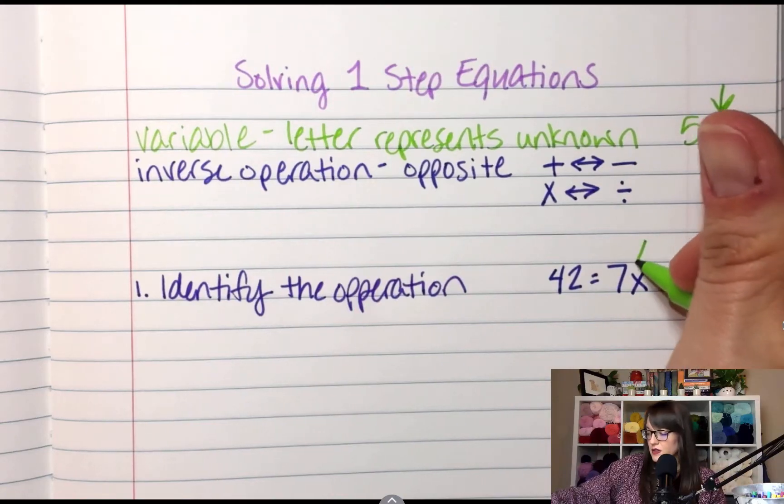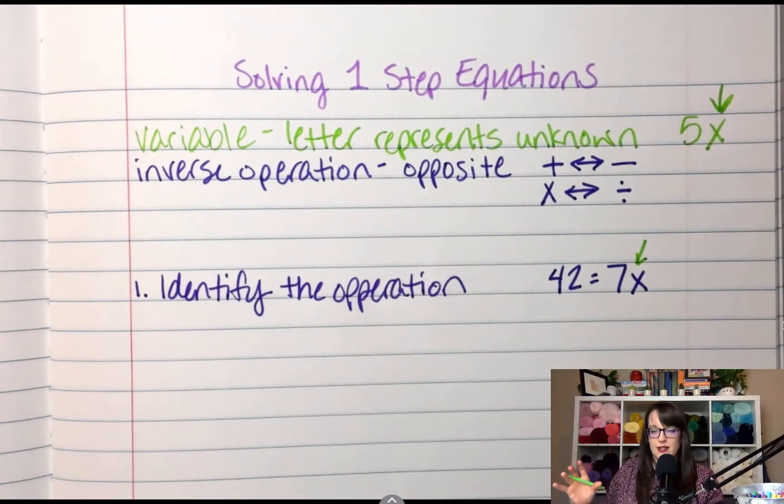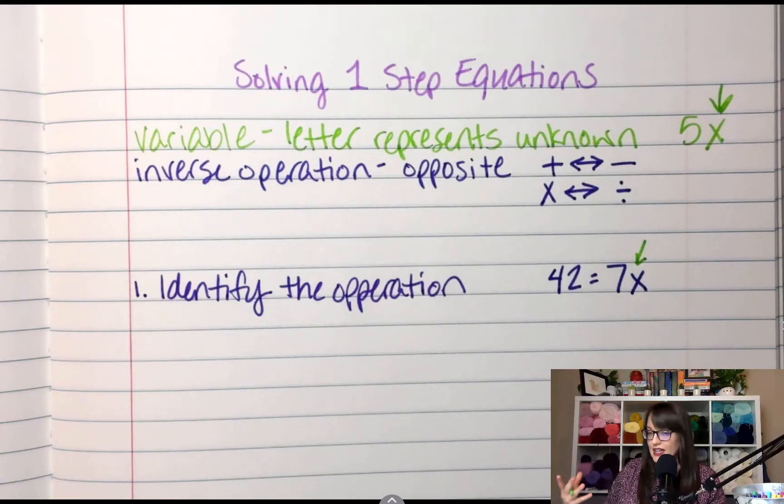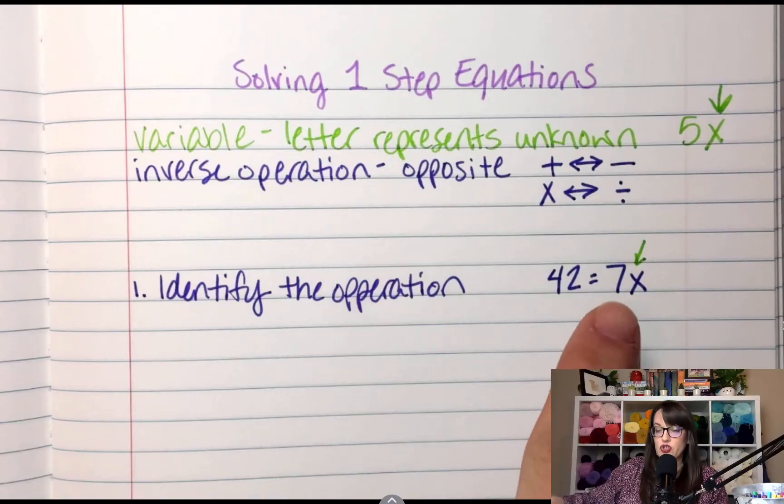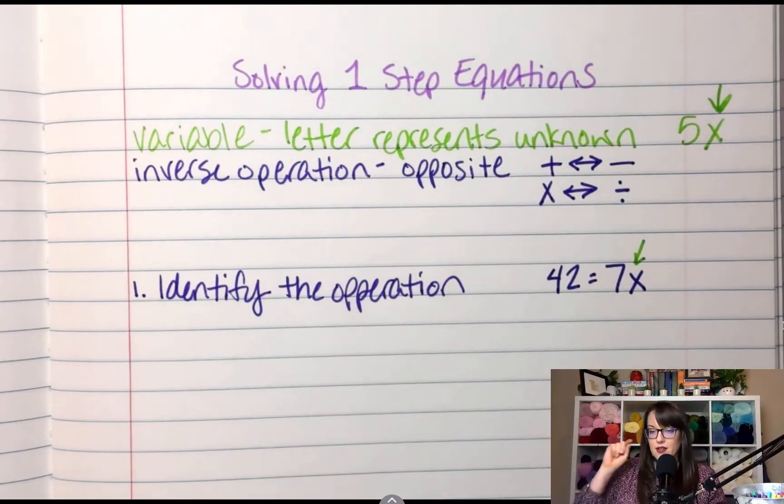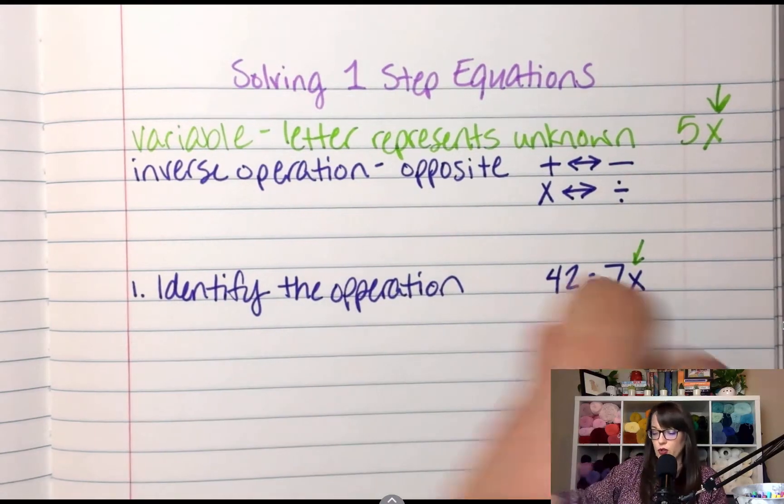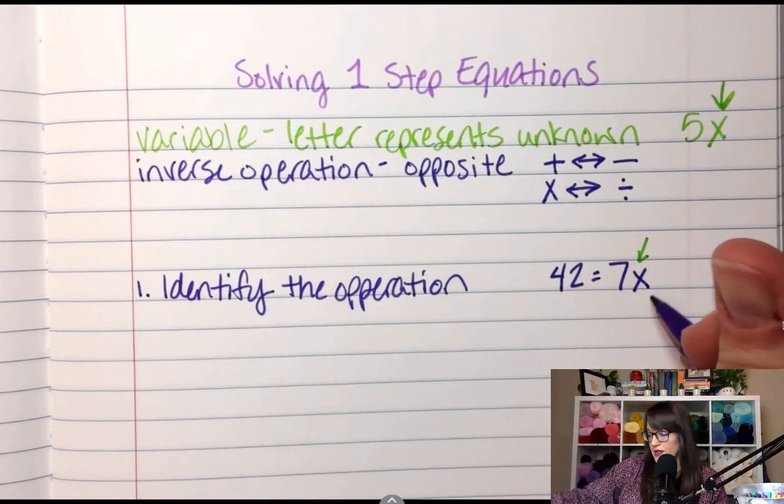Identify the operation. So between the 7 and the X, what is that? Is that 7 times X? Is that 7 divided by, added to, subtracted from? When there's no sign, it's multiply. So this is multiplication. My answer here is multiply.